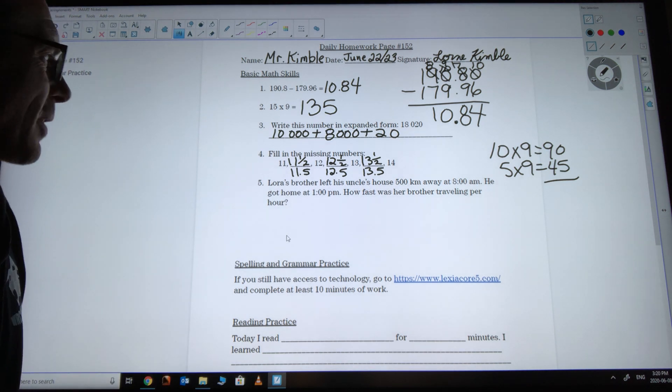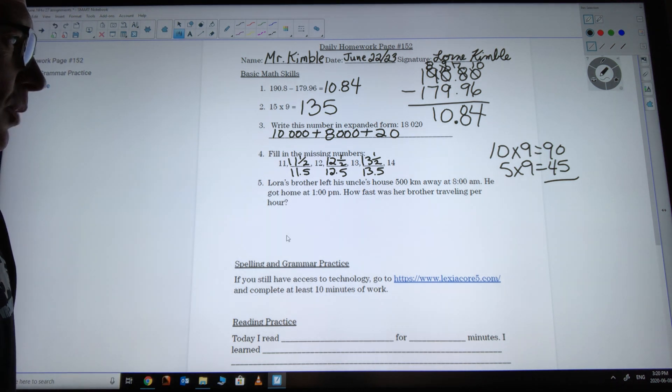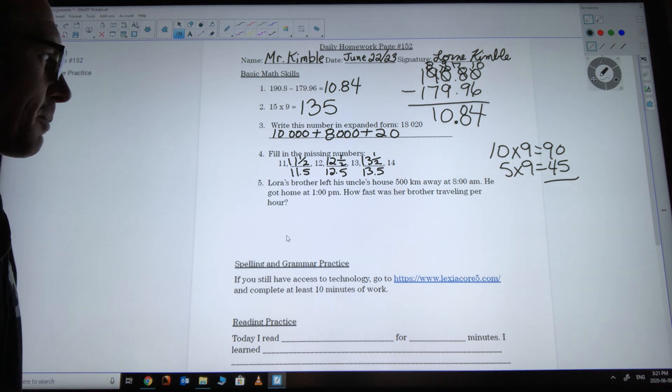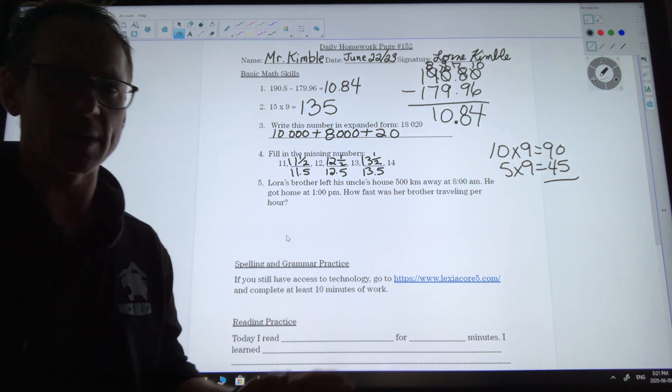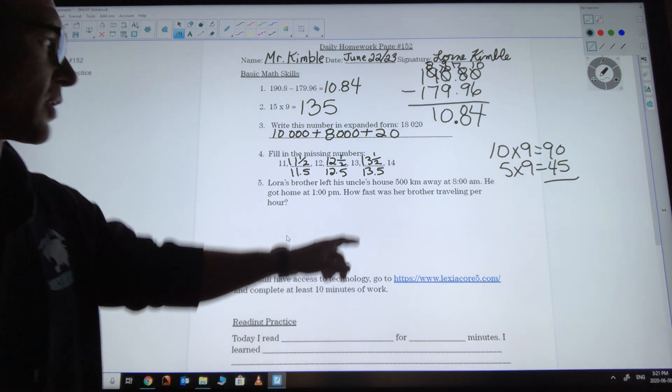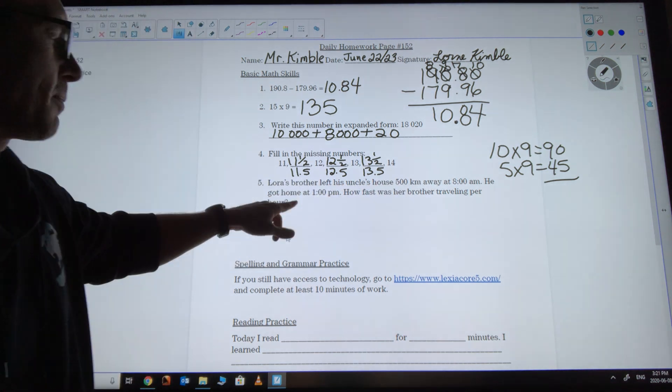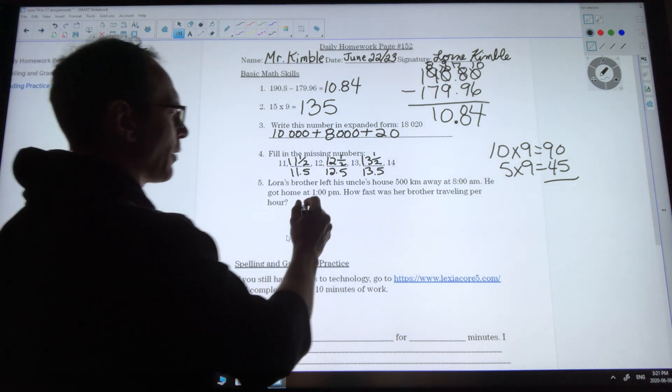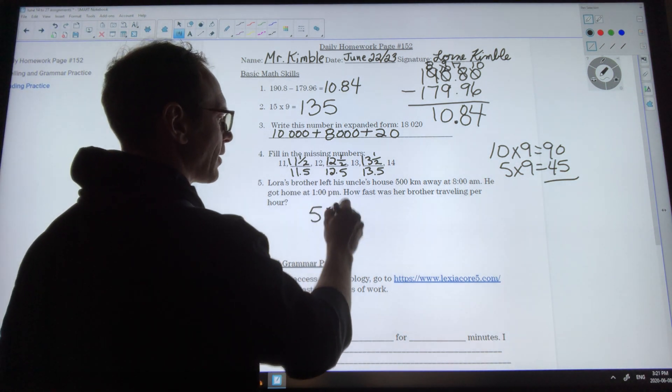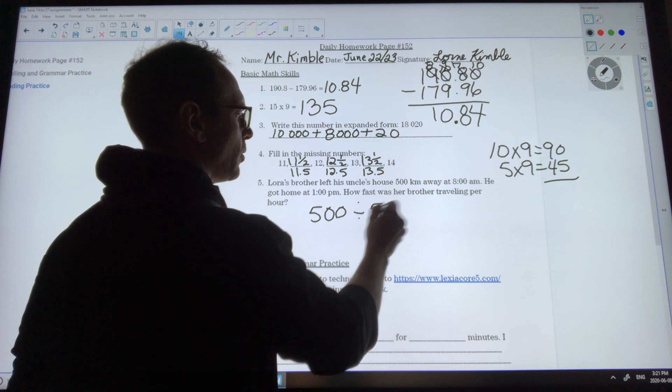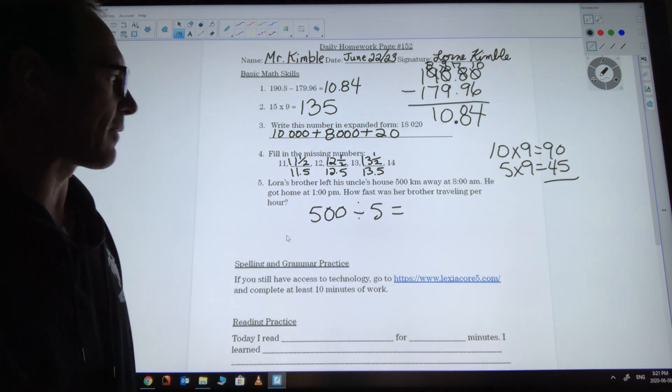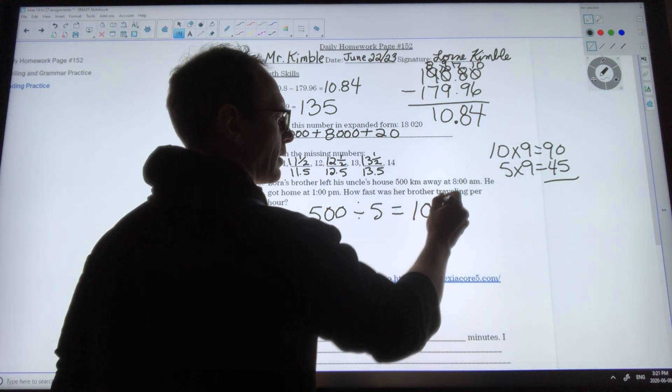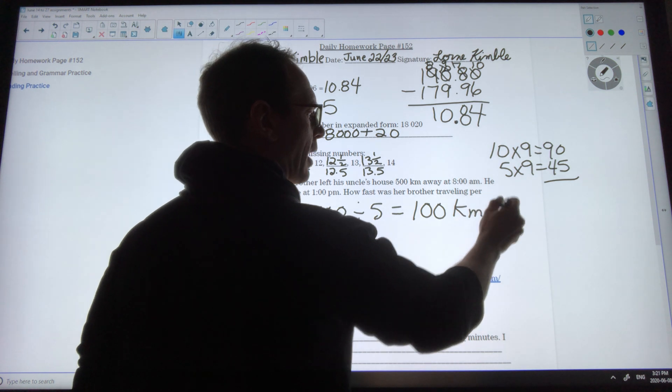Last question. It says Laura's brother left his uncle's house 500 kilometers away at 8 a.m. He got home at 1 p.m. How fast was her brother traveling per hour? Our first thing we need to figure out is how long was he driving for. From 8 a.m. to 1 p.m., well that's 9, 10, 11, 12, 1 o'clock. So 5 hours and he went 500 kilometers. If we were going 500 kilometers it took us 5 hours, we go 500 divided by 5 which would be 100 kilometers per hour.